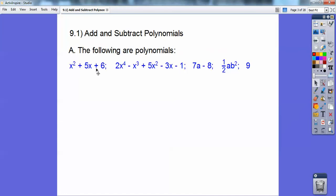So here's one, x squared plus 5x plus 6. Here's another one, 2x to the 4th minus x cubed plus 5x squared minus 3x minus 1. Here's another one, 7a minus 8. Here's another one, 1 half ab squared and 9. That's a polynomial also.